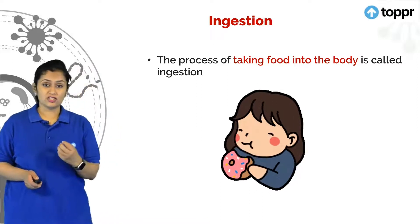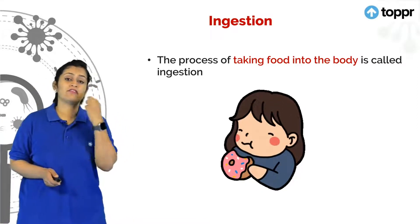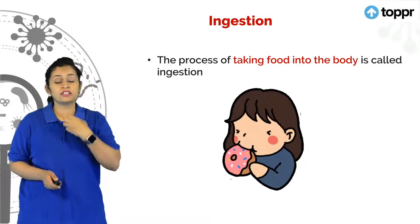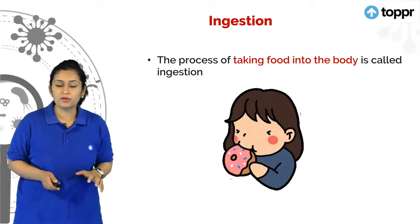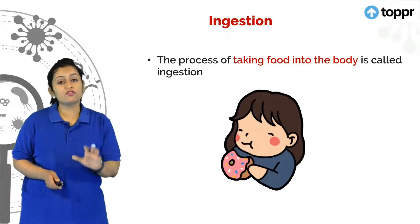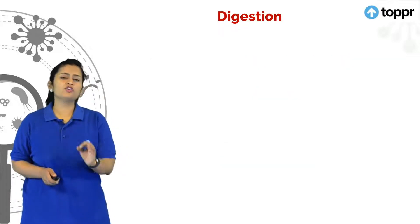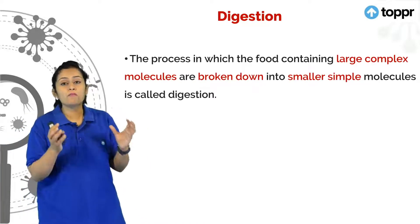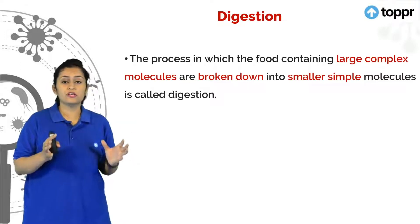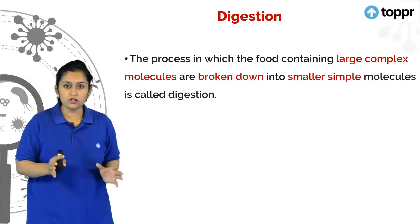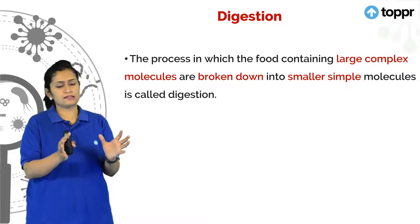After ingestion, once the food is in our body, it is in our buccal cavity. We are chewing it and then pushing it down through our esophagus to our digestive system. This ingested food is further digested. Now what kind of food do we eat? We eat a variety of food — carbohydrates, fats, roti, rice. All of them are complex, large molecules, and such large molecules are usually insoluble and we cannot utilise them as such.